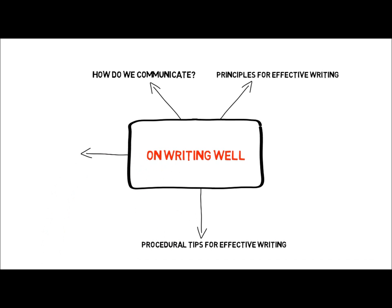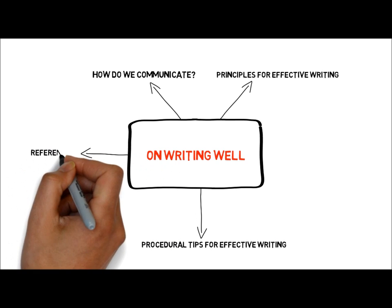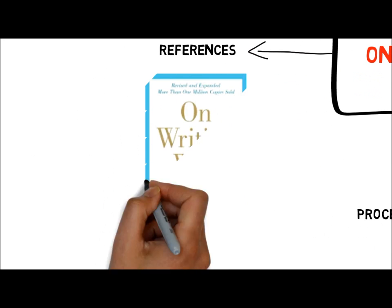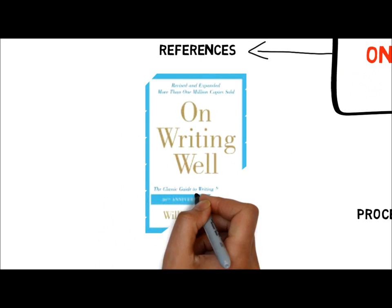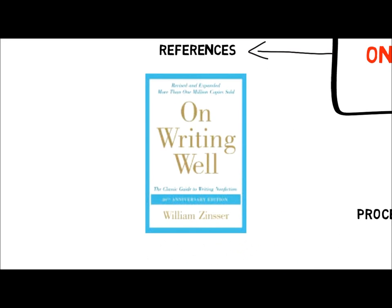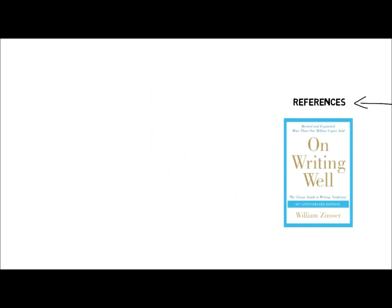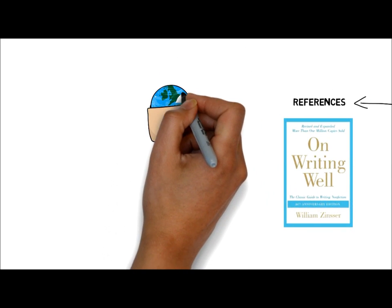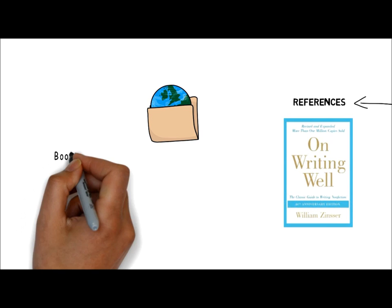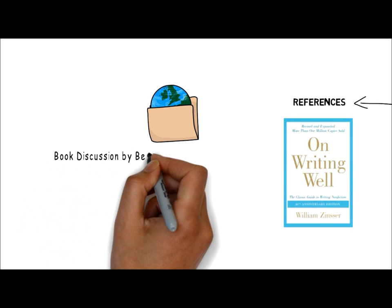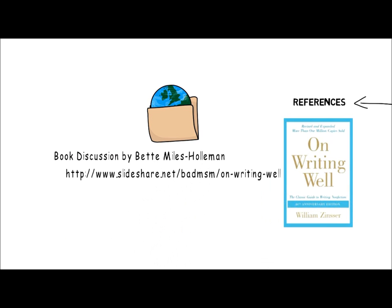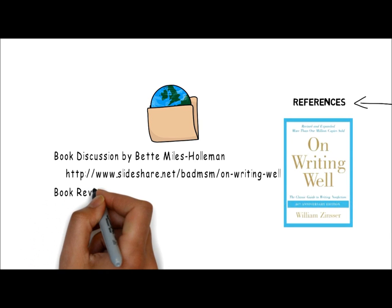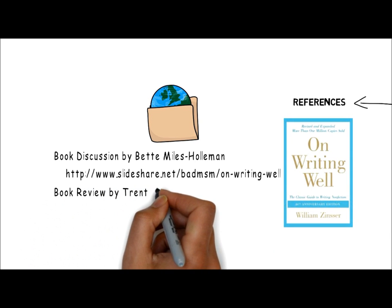The primary reference for this tutorial is the book 'On Writing Well' by William Zinser. This is a really valuable resource for anyone who is keen to improve their writing ability. There are also many internet resources that distill and discuss the key points of Zinser's work, such as the book discussion led by Betty Miles-Holman and a book review by Trent Ham.